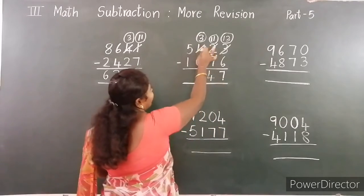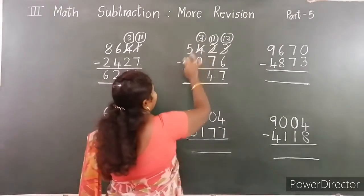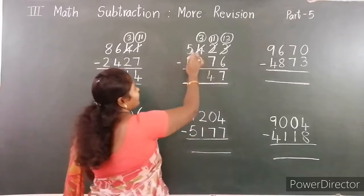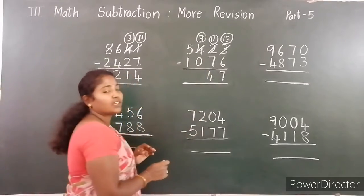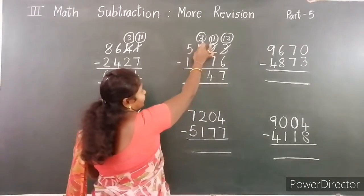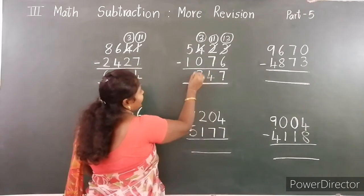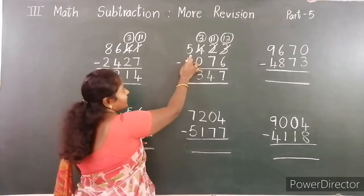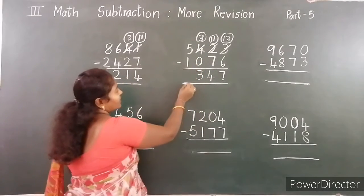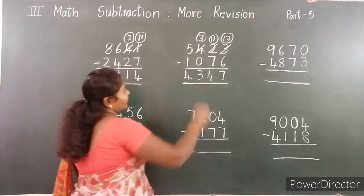Next, hundreds place: 3 minus 0. Subtracting 0 from any number — the difference is the number itself: 3. Thousands place: 5 minus 1 is 4.